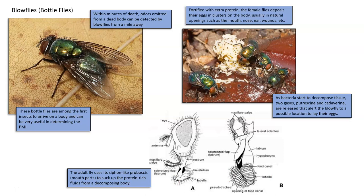Fortified with extra protein, the female flies deposit their eggs in clusters on the body — usually clusters of 50 eggs. They're usually in natural openings such as the mouth, nose, ear, wounds, etc. The flies want to lay their eggs in a spot on the body that is conducive to maggot feeding — they don't just randomly lay the eggs on the skin. They want to get them into the body, where the soft, moist tissue will provide food for the larvae or maggots.